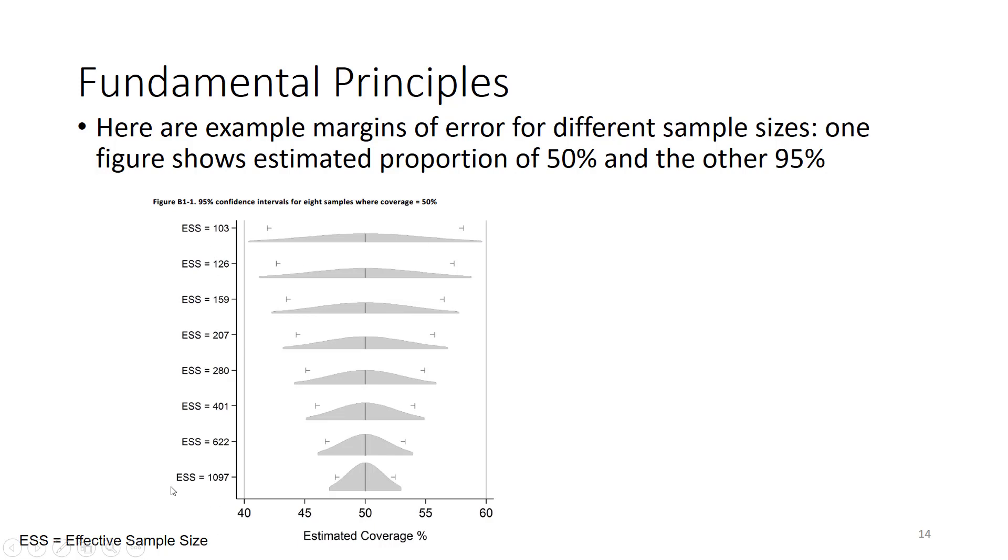If you do a bigger survey and interview 1,000, and again, half of them had been vaccinated, now the confidence interval, or the margin of error, goes from about 47% to 52%. So more precision requires a bigger sample size.